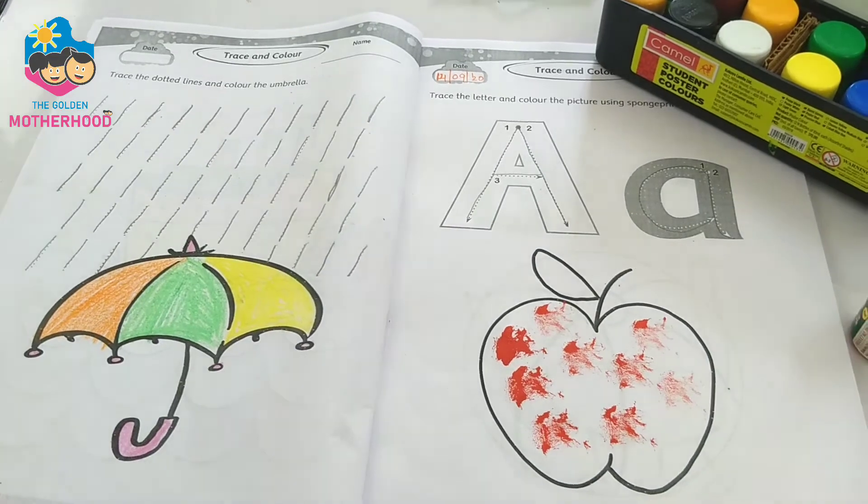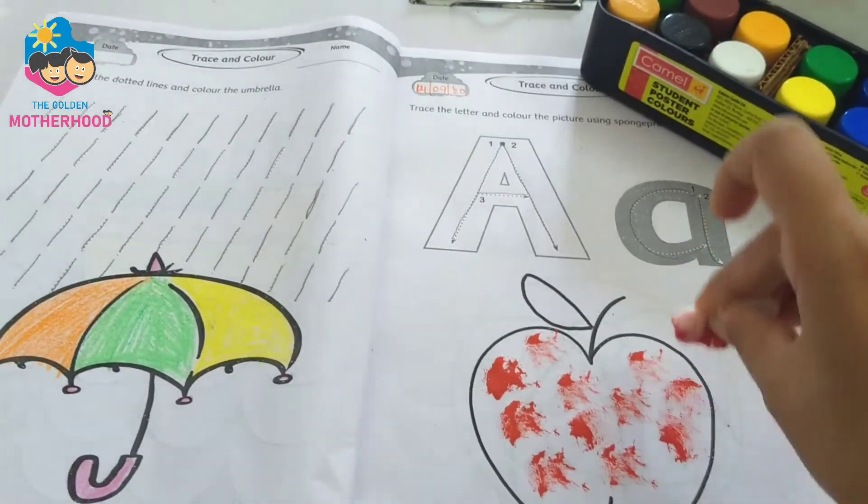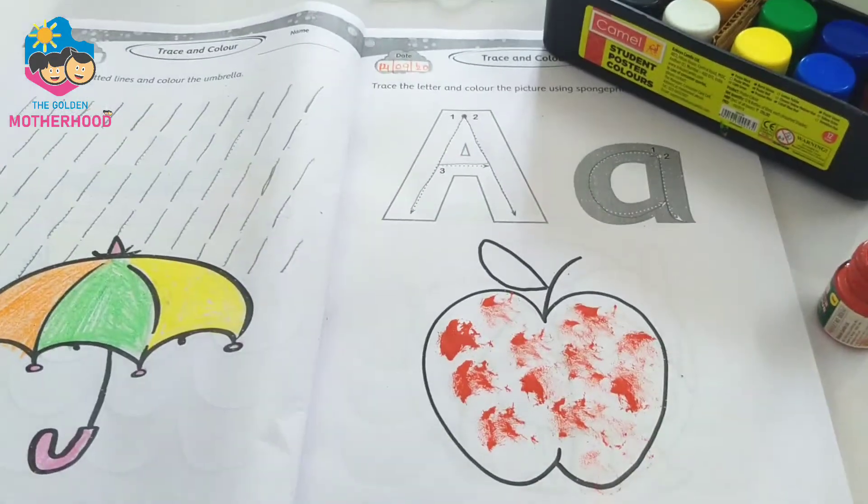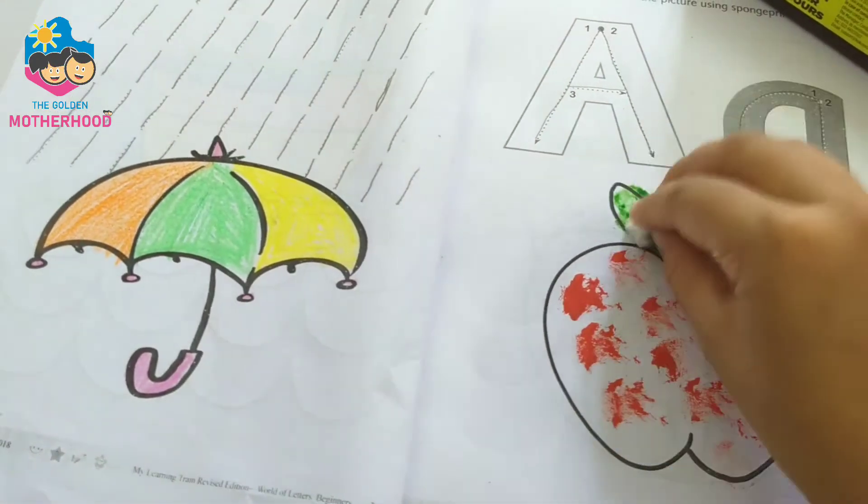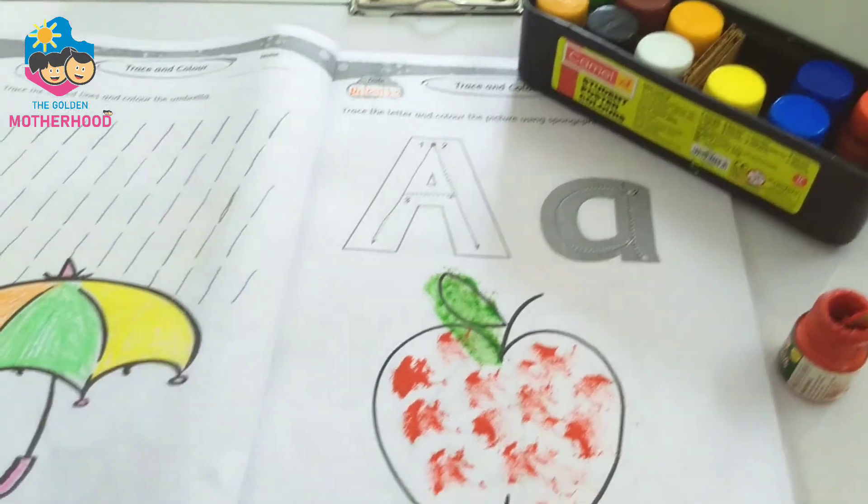Apples are found in red color. So, I fill red color. Leaves in green color.